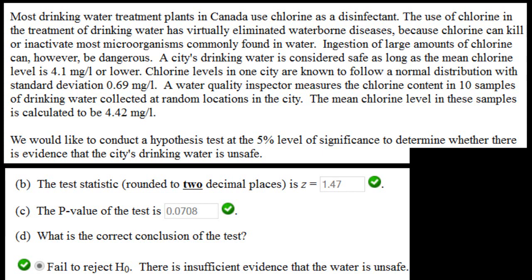Chlorine levels in one city are known to follow a normal distribution with standard deviation 0.69 mg per liter. A water quality inspector measures the chlorine content in 10 samples of drinking water collected at random locations in the city. The mean chlorine level in these samples is calculated to be 4.42 mg per liter. We would like to conduct a hypothesis test at the 5% level of significance to determine whether there is evidence that the city's drinking water is not safe.